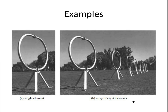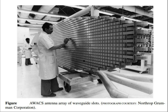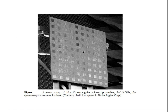This is the first example, in which a single loop antenna is placed in some geometrical and electrical fashion to form an array. This is the array of antennas used in the AWACS system, which is a major part of our defense system. This is the array of microstrip antennas.